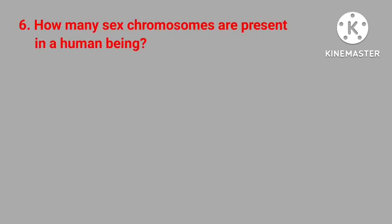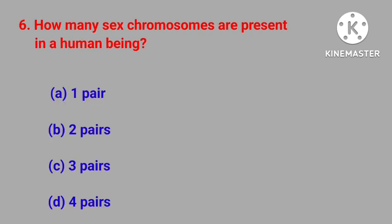Question number six: how many sex chromosomes are present in human beings? One pair, two pairs, three pairs, four pairs. Correct answer is one pair.